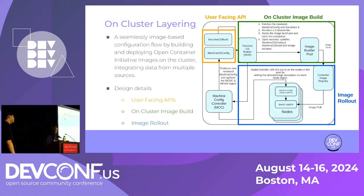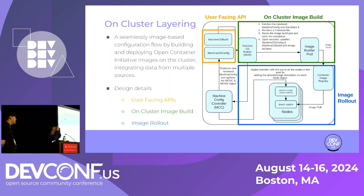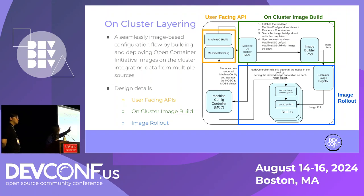Putting the three pieces together: after you input things through MachineOSConfig and MachineOSBuild, this first comes to on-cluster image build, then after the image is built it goes to image rollout, which pulls the image and rolls it onto your node. This forms on-cluster custom layering, which is the main feature the Machine Config Operator is currently implementing and will be promoted to the default update path in the future. On-cluster custom layering is a fully image-based configuration flow, building and deploying OCI images from the cluster, integrating data from multiple resources.